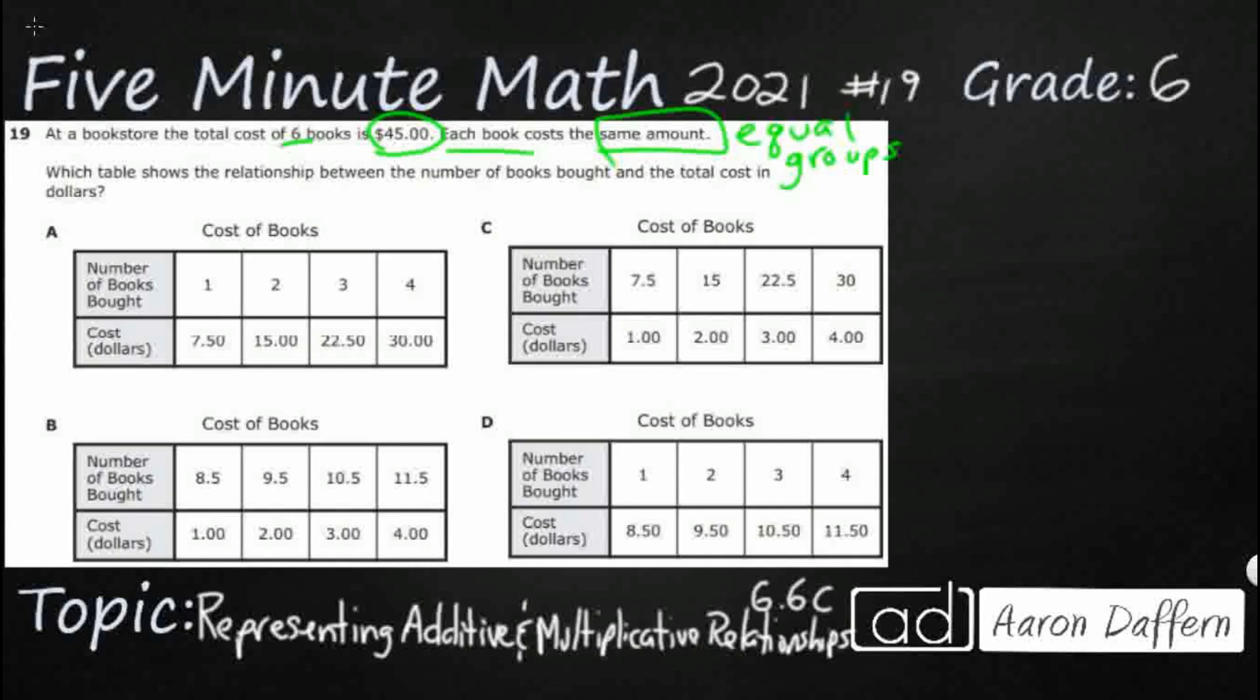Well let's see if we could draw a picture here. A little strip diagram. So let's say I've got my six books here. Turn this like a bookshelf. Those are my six books and then I've got the total of my six books right here and it's $45.